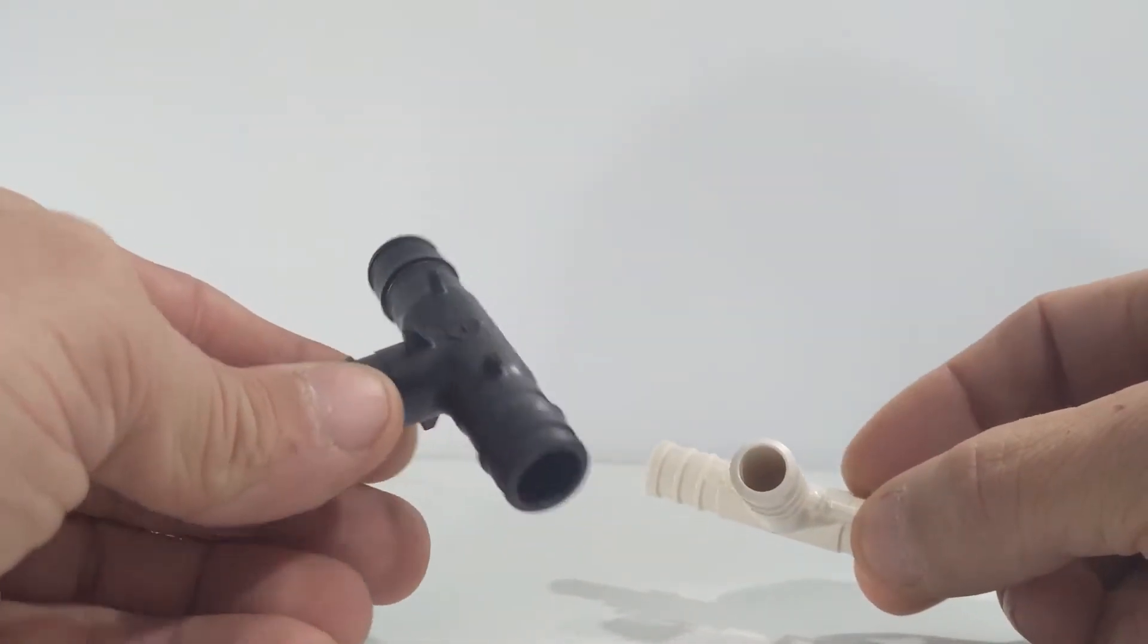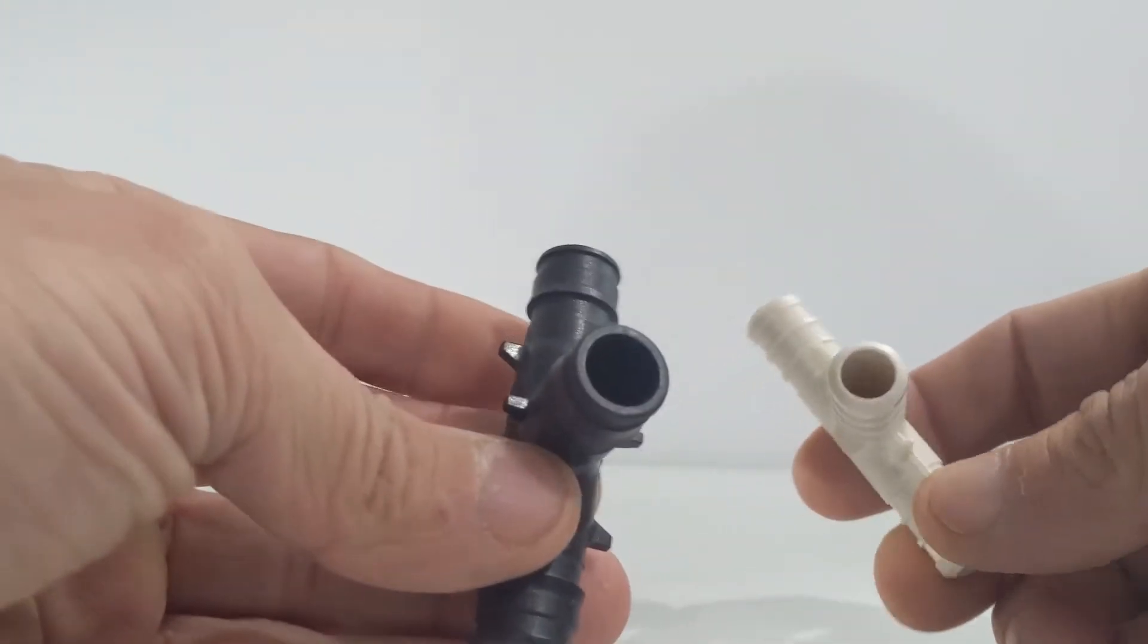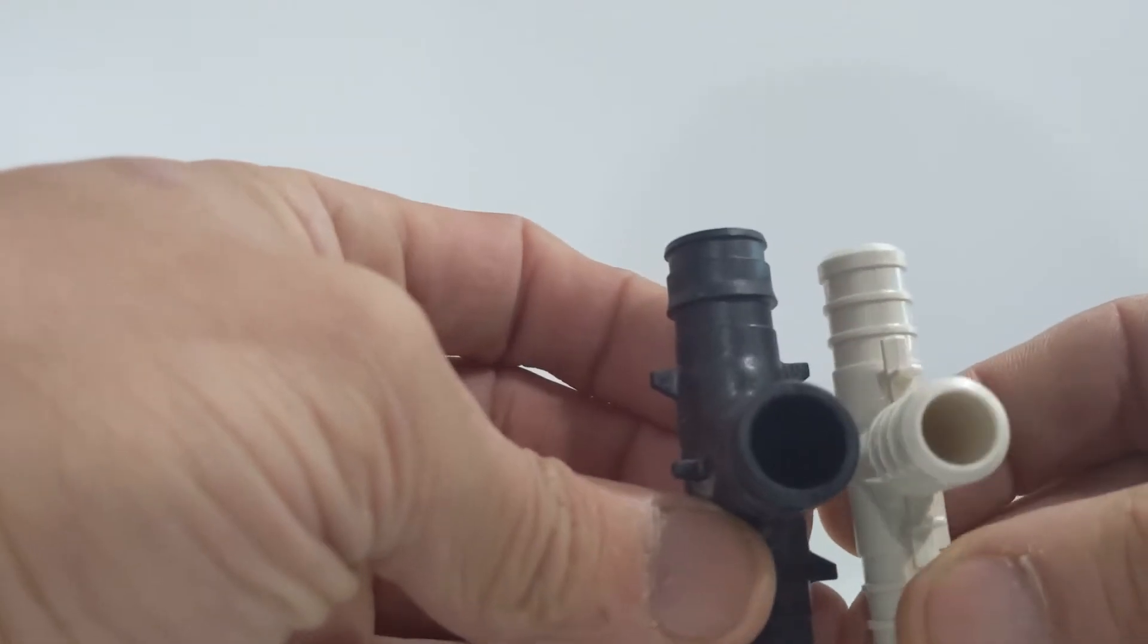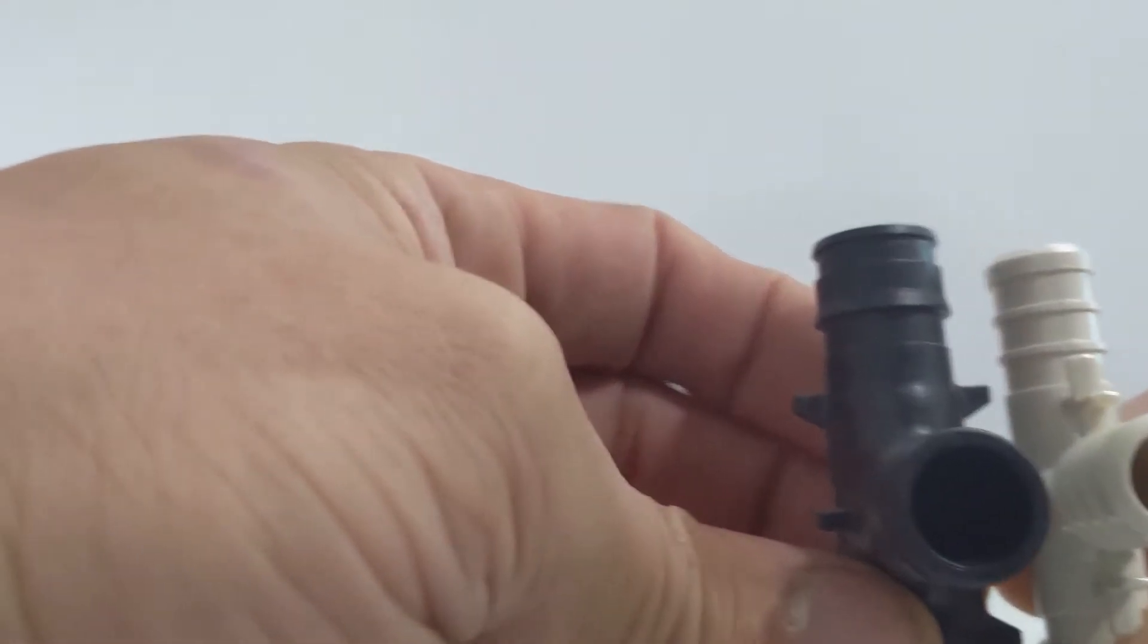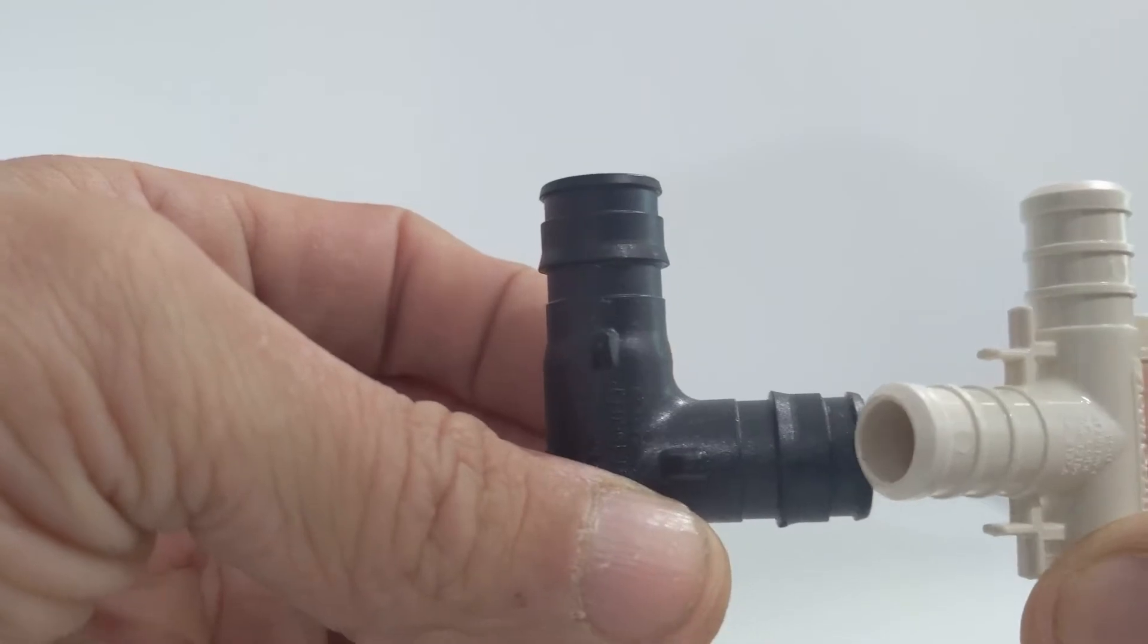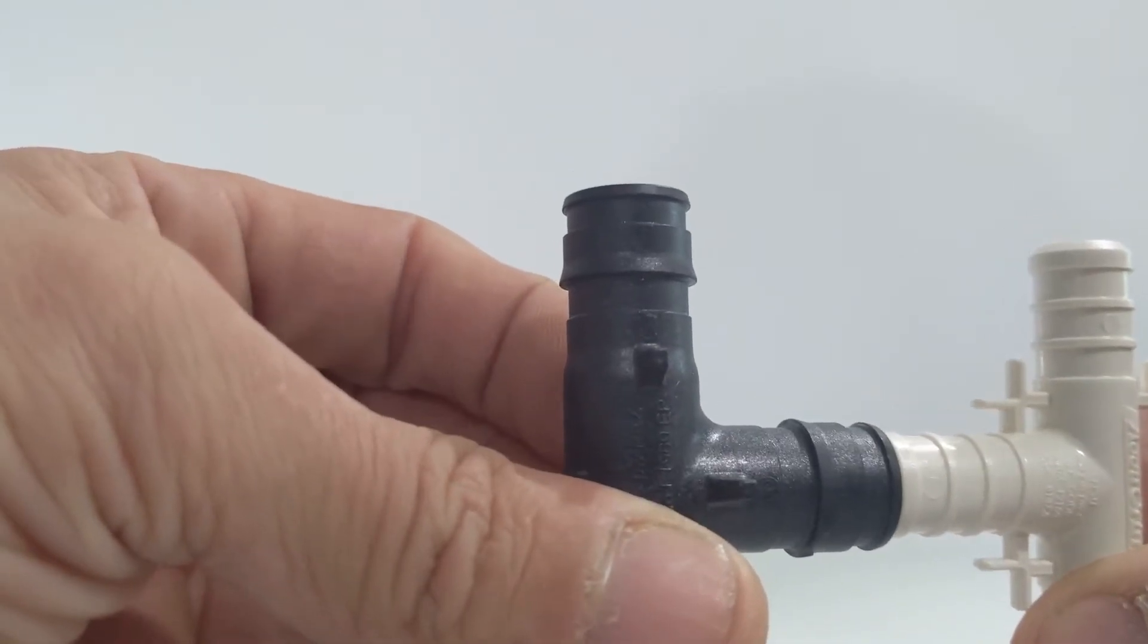The black one is PEX-A, the white one is PEX-B. The first thing you'll notice is the difference in size. You can see the PEX-B almost fits inside the PEX-A, which is going to reduce flow, you should know that right away.